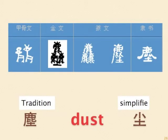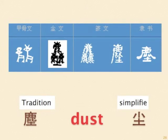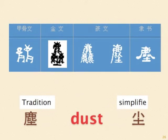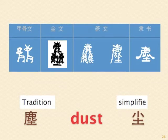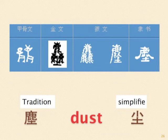Next word: dust. The ancient script shows two or three deer running. Later on, soil ground was added to the lower part and only one deer was left at the upper part, meaning that when a group of deer run by, dust would be all over the air. The simplified form further simplifies the upper part with the word 'small', making the whole word mean small soil, or dust.